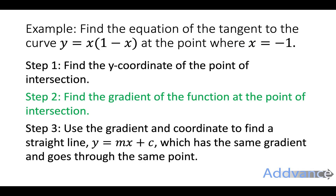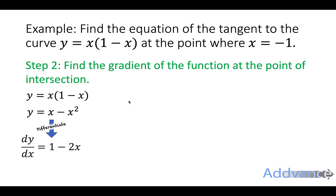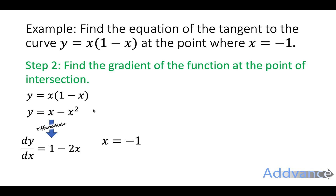Step two, we find the gradient of the function at the point of intersection using differentiation. Starting with y = x(1 − x), we expand the brackets to get y = x − x², then differentiate to get dy/dx = 1 − 2x. Substituting x = −1, we find the gradient is 3.